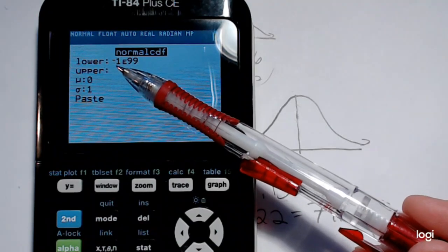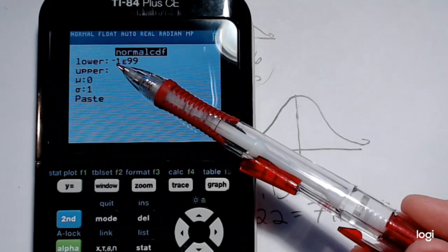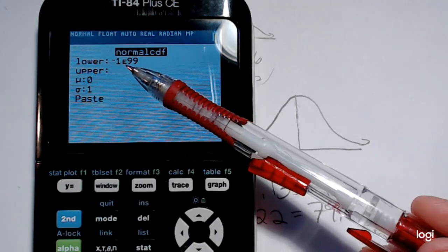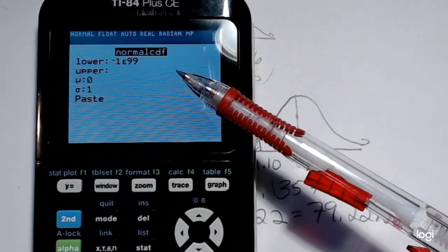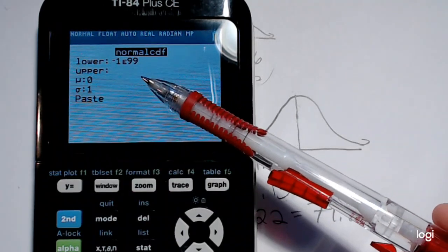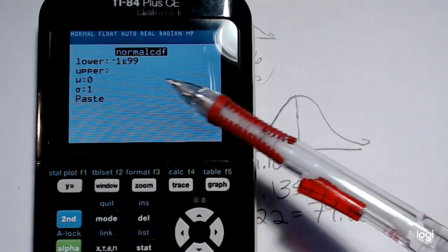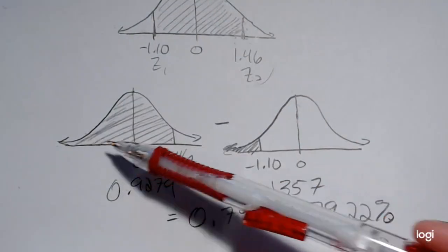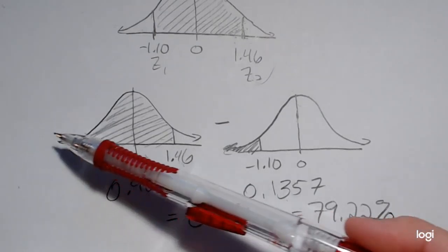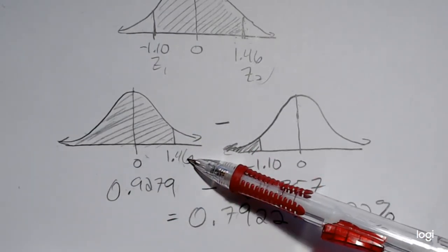The calculator approximates that as negative 1 times 10 to the 99th power. You could type in negative 1 and a bunch of zeros, and that would be just fine, if your calculator doesn't default to that. That would be for finding an area from negative infinity up to a Z-score. Your lower bound would be negative infinity. Your upper bound would be 1.46.